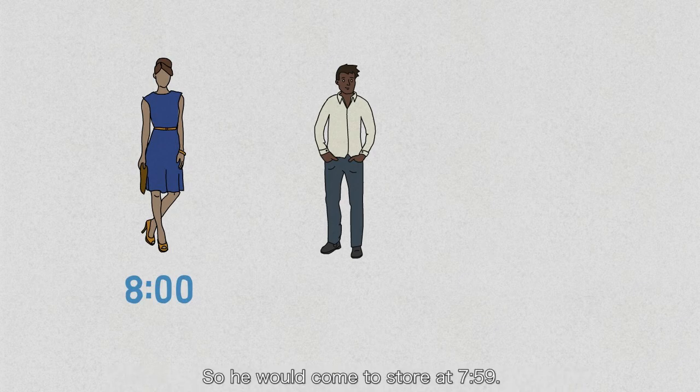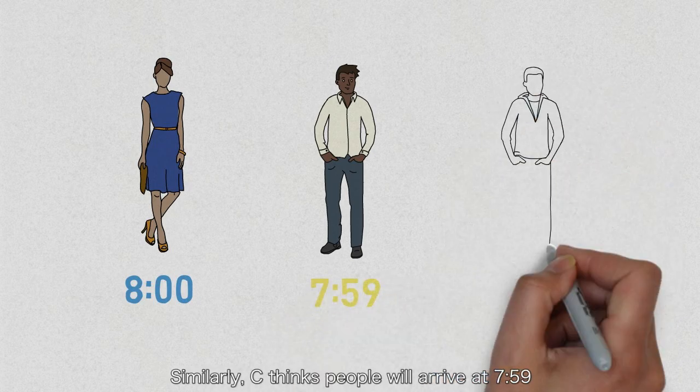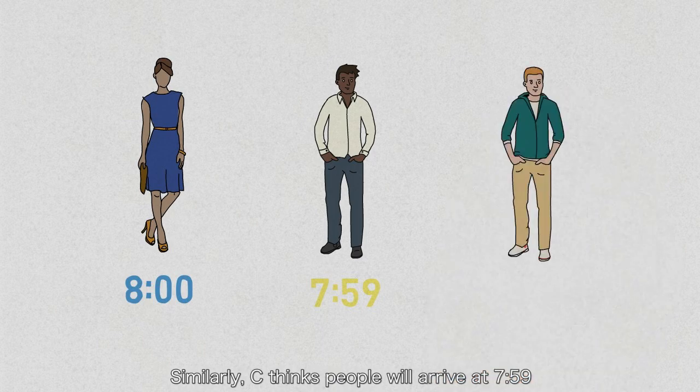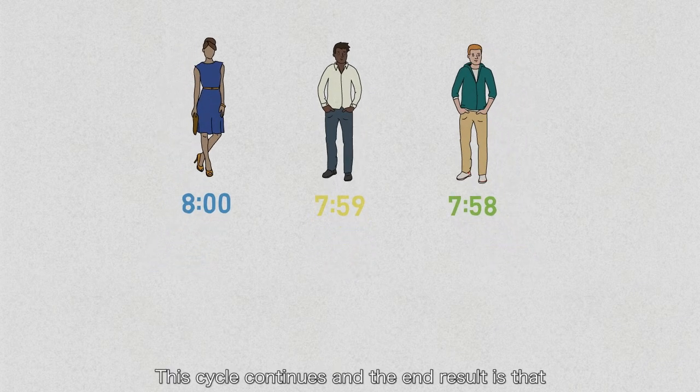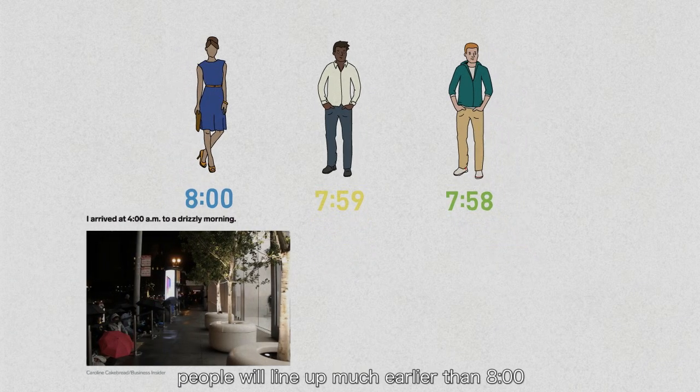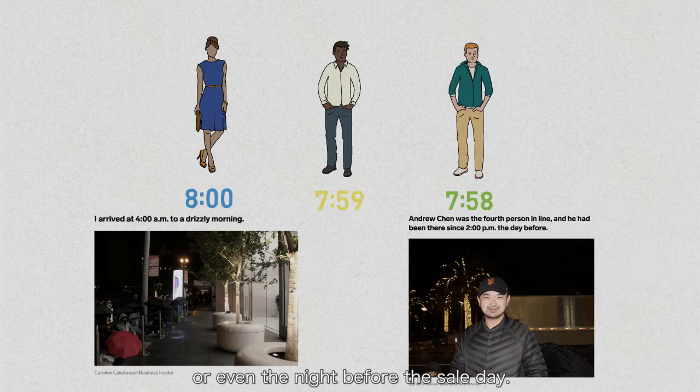Similarly, Steve thinks people will arrive at 7:59, so he has to get there even earlier, like 7:58. This cycle of thoughts continues and the end result is that people will line up much earlier than 8 o'clock or even the night before the sales day.